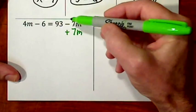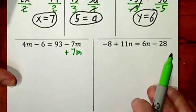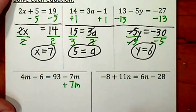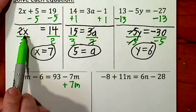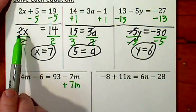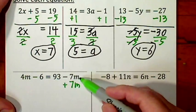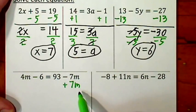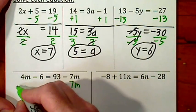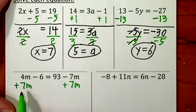And notice, I want to get rid of the negative 7m, the entire thing. Up here, I only wanted to get rid of the 2. I was trying to leave the x where it was. That's why I only divided by a 2. Down here, I'm trying to get rid of the entire term, negative 7m, so I add 7m.